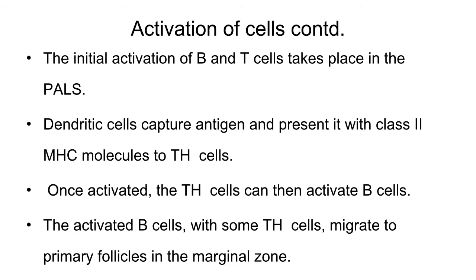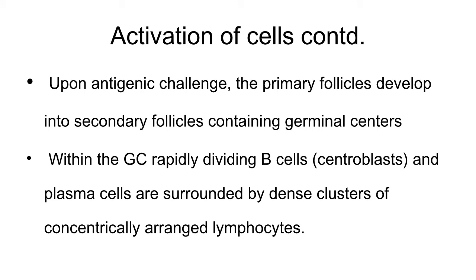The initial activation of both T and B cells occurs in the PALS. The dendritic cells in the PALS capture the antigen and present it to the T helper cells with class 2 MHC molecules. The activated T helper cells in turn activate the B cells, and the activated T and B cells migrate to the primary follicles in the marginal zone. Upon antigenic challenge, the primary follicles develop into the secondary follicles containing germinal centers, and the activated B cells are present inside the germinal centers.